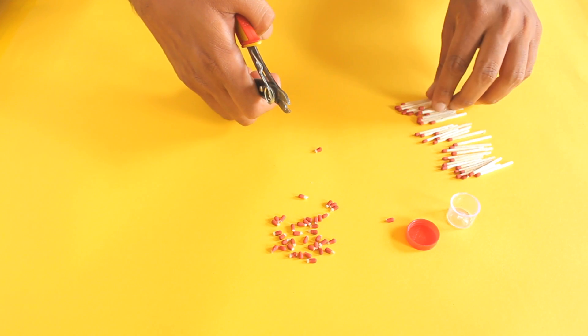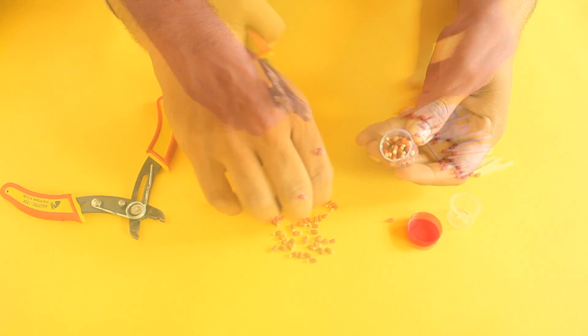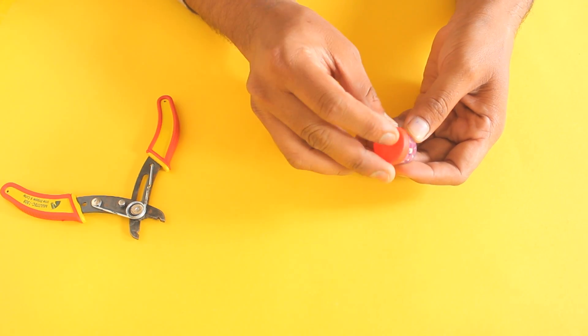Now let's begin our project by collecting the matchstick heads by cutting them with a cutter. Collect all the matchstick heads and store them for making rockets.